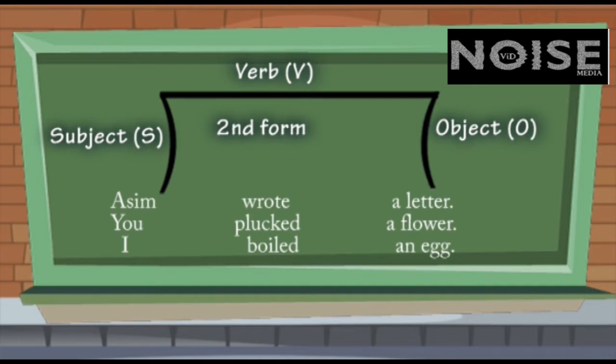The construction of verb positive sentences is quite easy. Simply change the verb into past form and add object if you need it.